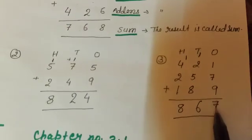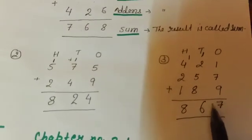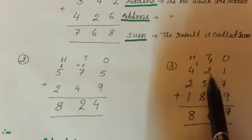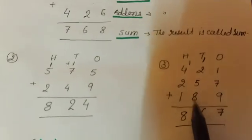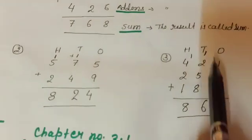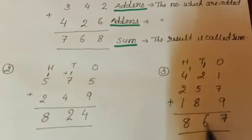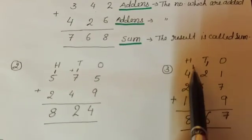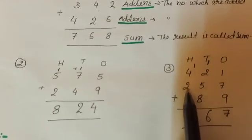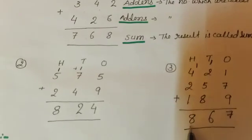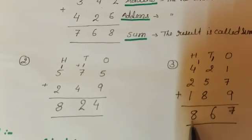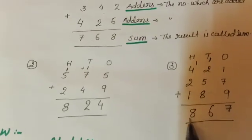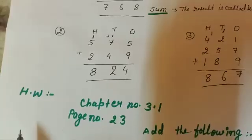For 17, we write here 7, 1 is carry over. 2, 5, 8 plus 1 is 16. For 16, we write here 6 and 1 carry. 1 plus 4 plus 2 plus 1 equal to 8. 867. Answer is 867.